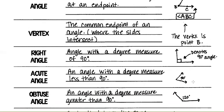Obtuse angle: if I were to move my 90-degree angle the other way, that becomes obtuse — greater than 90 degrees. An angle with a degree measure greater than 90 degrees is an obtuse angle, so a 120-degree angle is obtuse.